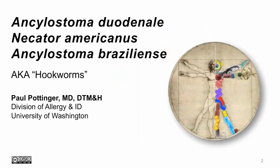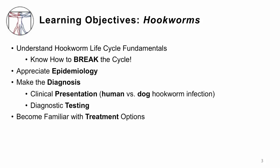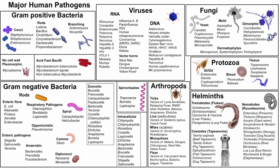This lecture will cover Ancylostoma duodenale, Necator americanus, and Ancylostoma braziliense — the hookworms. I'm Dr. Paul Pottinger. The objectives for this lecture on the hookworms are to understand their life cycle so that you can break that cycle, appreciate the epidemiology, know who gets infected and where, be able to make a diagnosis, recognize the clinical presentation, and become familiar with treatment options for hookworm infection.